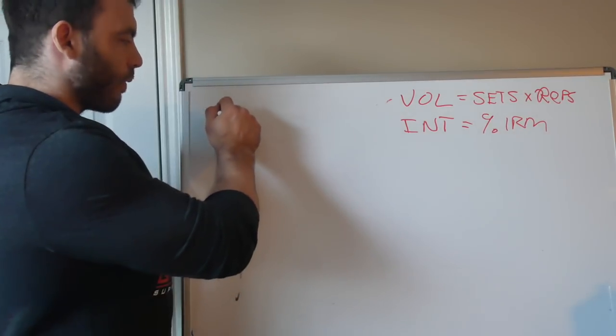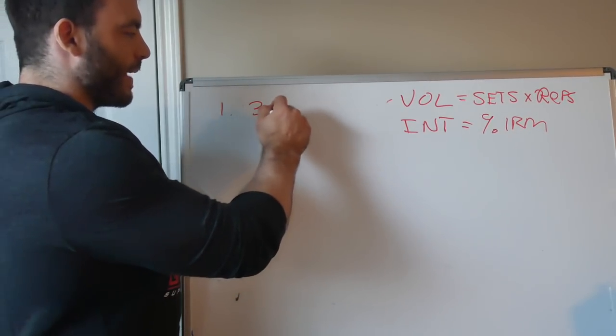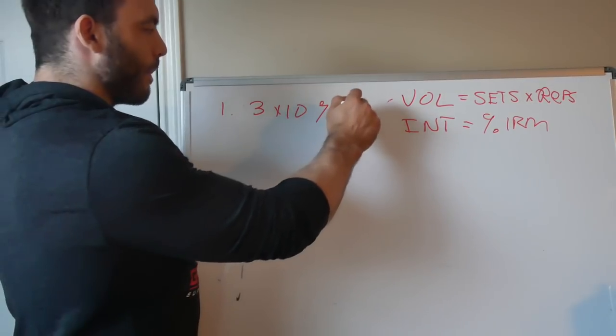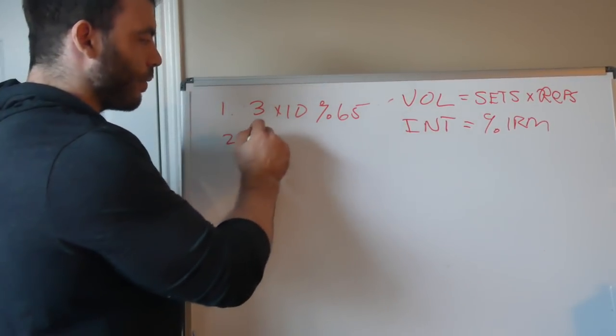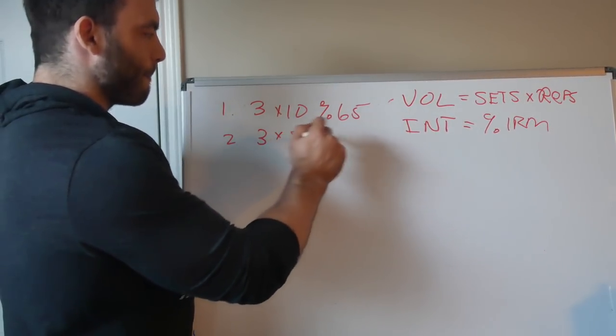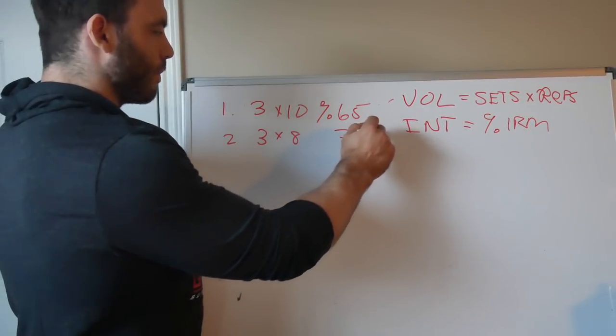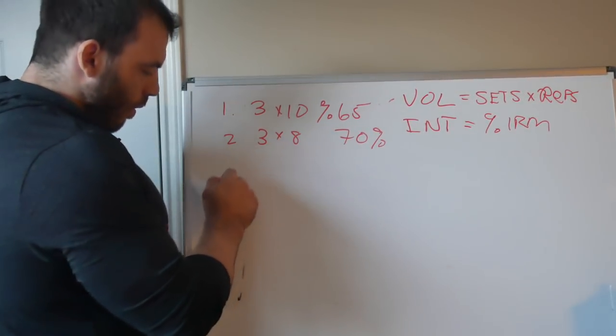This is probably the very standard percentage-based routine that you guys have seen, but maybe not fully understood. So if you start out in week 1, and I'm doing 3 sets of 10 at maybe 65%, and then week 2 I go to 3 sets of 8, 70%, and then maybe we go all the way down.